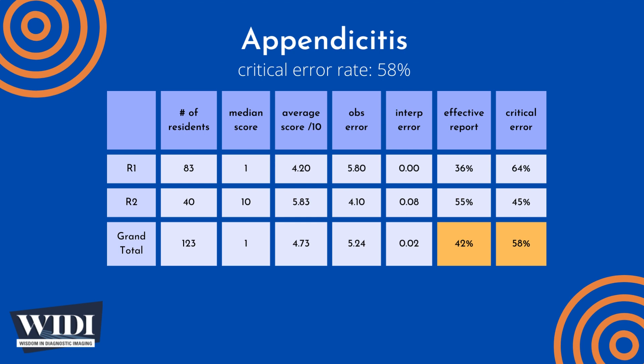We define a report having a critical error to be one with scores between 0 and 2 — in terms of letter grades, this would be an F or a D. In this most missed case, 58% of residents produced reports with critical errors.